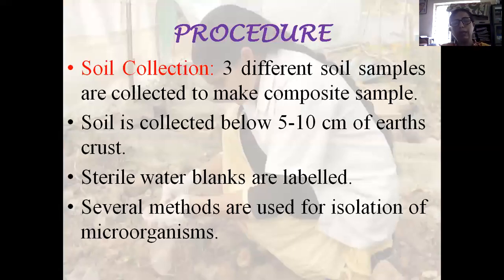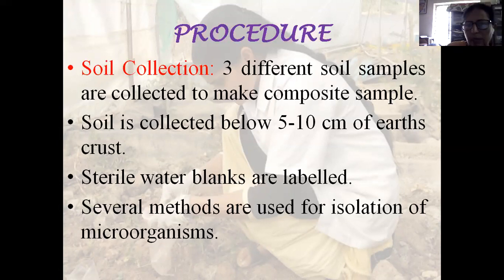Procedure. First of all we will collect the soil. Soil is collected from 3 different areas to make a composite soil sample and is collected below 5 to 10 cm of the earth's crust.